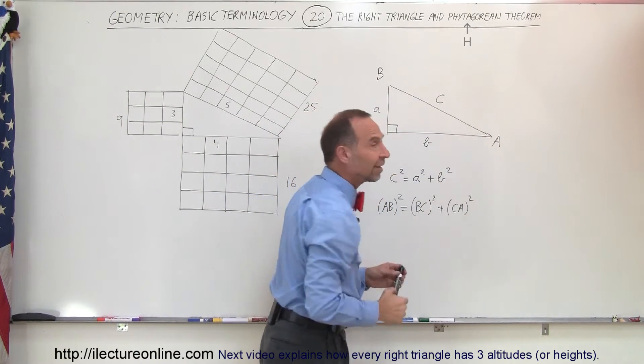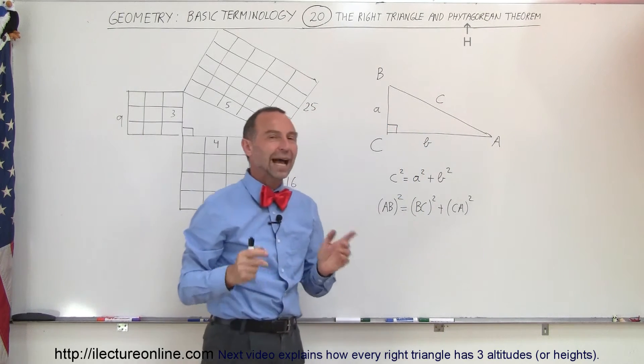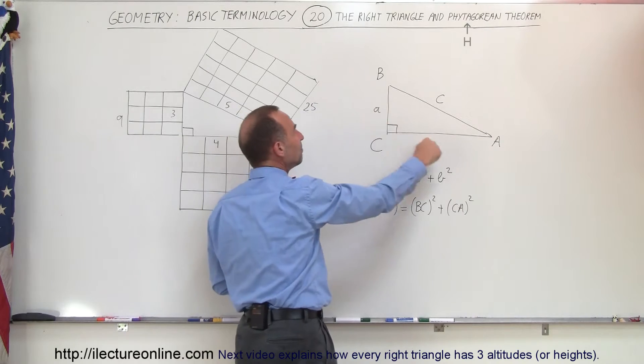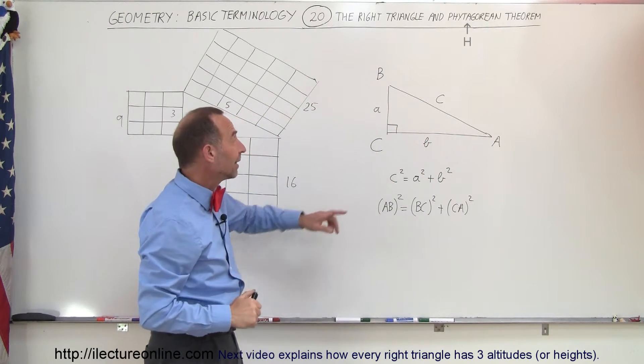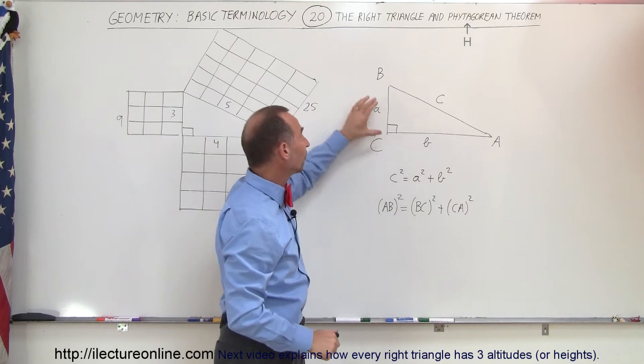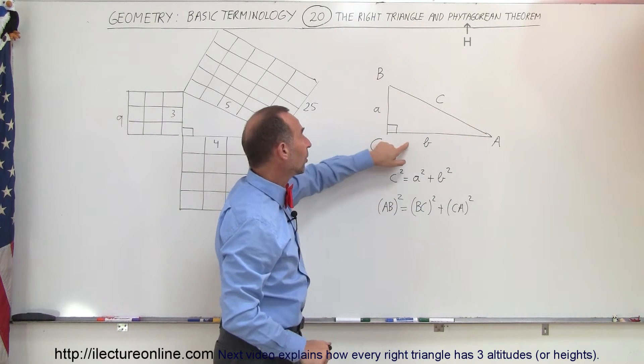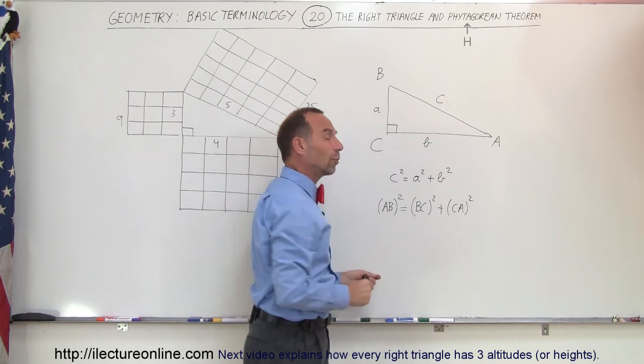C being the longest of the three sides, which is directly opposite of the right angle and therefore called the hypotenuse, and then A and B are the two legs of the right triangle. Pythagoras said that the length of the hypotenuse squared is equal to the sum of the length of one leg squared plus the length of the other leg squared, so therefore C squared equals A squared plus B squared.